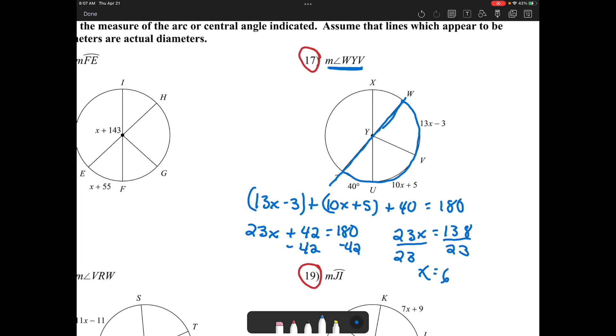But that's not my answer. My answer is what is the measurement of WYV? So what is the measurement of this angle? So how would I find that? Because I'm looking for just this angle. Well, I would take X equals 6 and I would substitute it in for X, so I would have 13 times 6 minus 3. So the actual measurement of that angle is 75 degrees. So that's how I would find that.